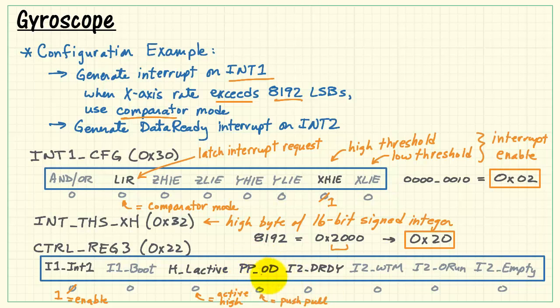It is also push-pull format by default, but if you set that to a 1, you'd have an open-drain style output. We want to generate the data-ready interrupt on interrupt number 2 output. We need to set this bit to 1.